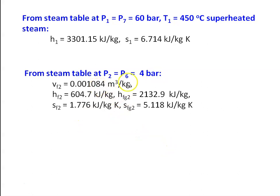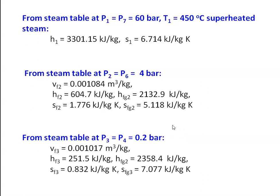From the superheated steam table at P1 equal to 60 bar and T1 equal to 450°C: H1 equal to 3301.15 kJ/kg, S1 equal to 6.714 kJ/kg·K. At 4 bar (feed water heater): VF2 equal to 0.001084 m³/kg, HF2 equal to 604.7 kJ/kg, HFG2 equal to 2132.9 kJ/kg, SF2 equal to 1.776 kJ/kg·K, SFG2 equal to 5.118 kJ/kg·K. At condenser P3 equal to 0.2 bar: VF3 equal to 0.001017 m³/kg, HF3 equal to 251.5 kJ/kg, HFG3 equal to 2358.4 kJ/kg, SF3 equal to 0.832 kJ/kg·K, SFG3 equal to 7.077 kJ/kg·K.